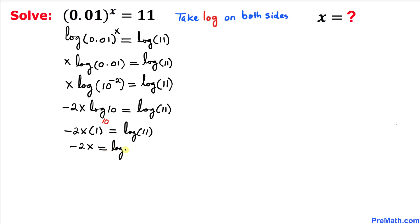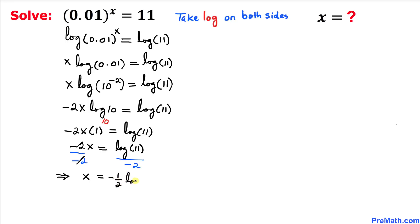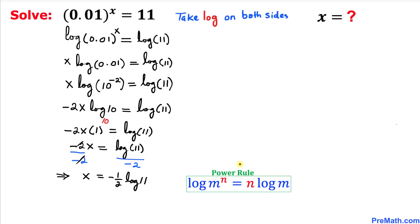Therefore our equation becomes negative 2x equals log of 11. Now let's divide both sides by negative 2 to solve for x — this cancels out — so x equals negative 1 over 2 times log of 11. Applying the power rule again, this becomes x equals log of 11 to the power negative 1 over 2.